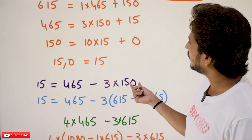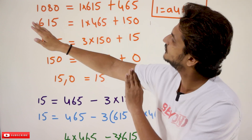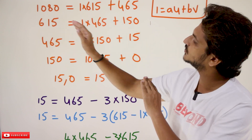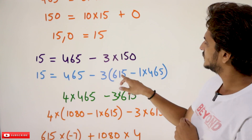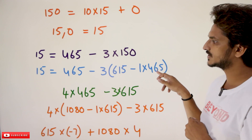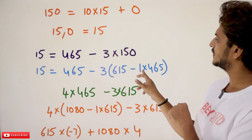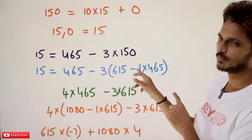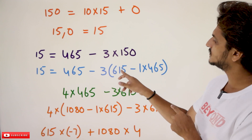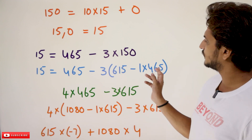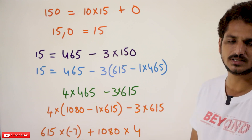Now in place of 150: from the earlier step, 150 = 615 − 1 × 465. Substituting: 15 = 465 − 3 × (615 − 1 × 465). When −3 goes inside it becomes +3 × 465. So the entire expression becomes 4 × 465 − 3 × 615.